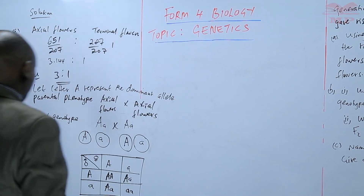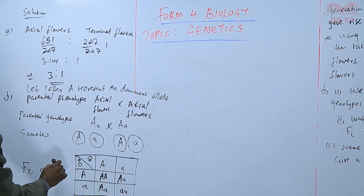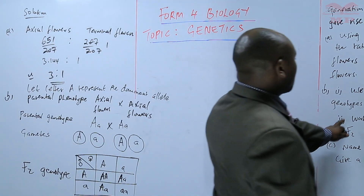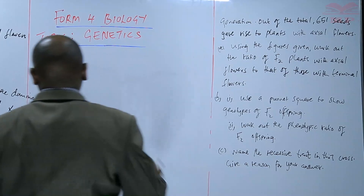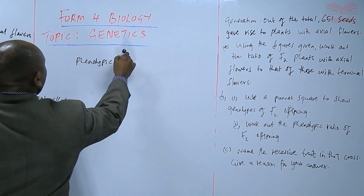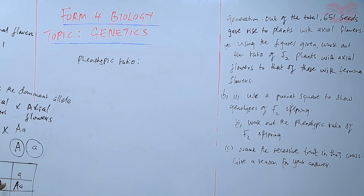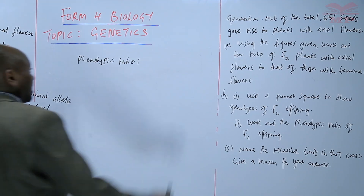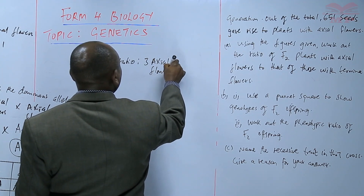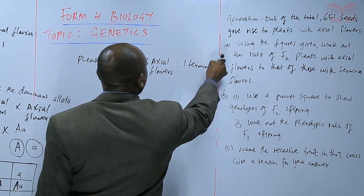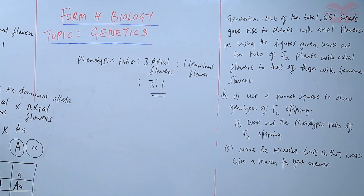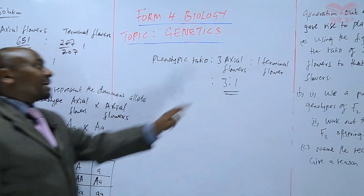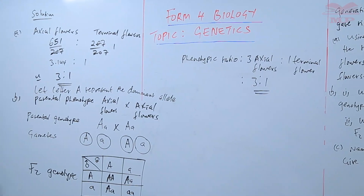This gives us the F2 genotypes. We are asked to work out the phenotypic ratio of the F2. The phenotype of the first combination is axial, the second is axial, the third is axial, and the last one — aa — is terminal. So we have three axial flowers against one terminal flower, giving a ratio of 3:1. This agrees with the ratio we calculated earlier from the actual plant counts, which confirms the answer is correct.